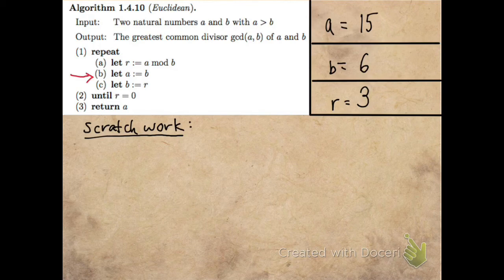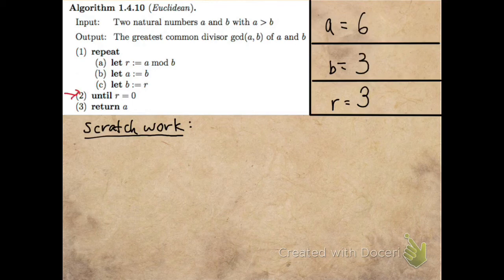And then I move to the next step. This is where I'm going to move those two numbers up. So I'll let A equal B, and I'll let B equal R. And then I check, is R equal to 0?